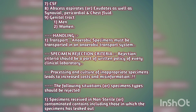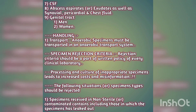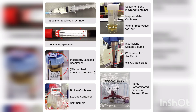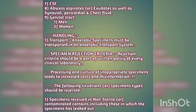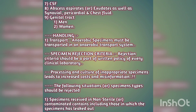Now we will discuss specimen rejection criteria. You need to be thorough about the different situations that lead to specimen rejection. Rejection can occur at pre-analytical, analytical, and post-analytical stages, but mostly specimen rejection criteria arise from the pre-analytical stage — for example, a mismatch between patient name, file number, or contact information.